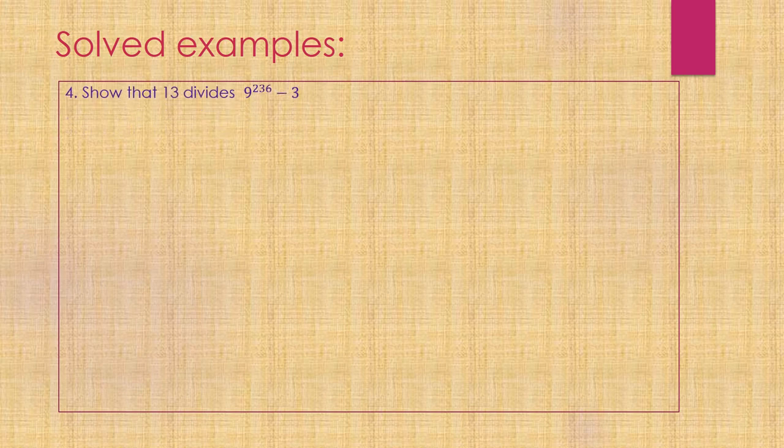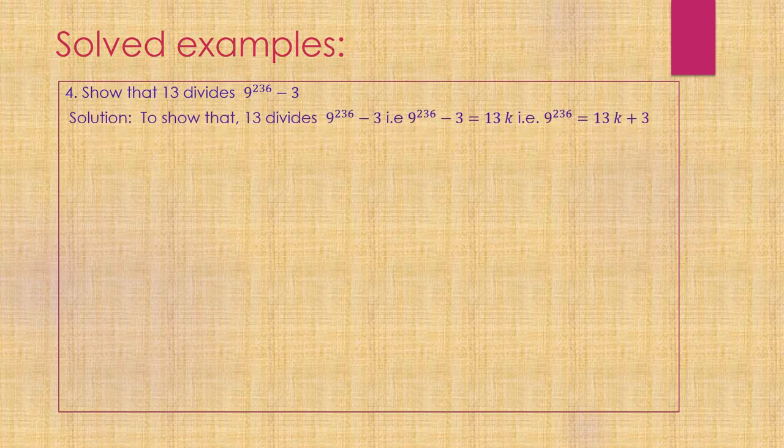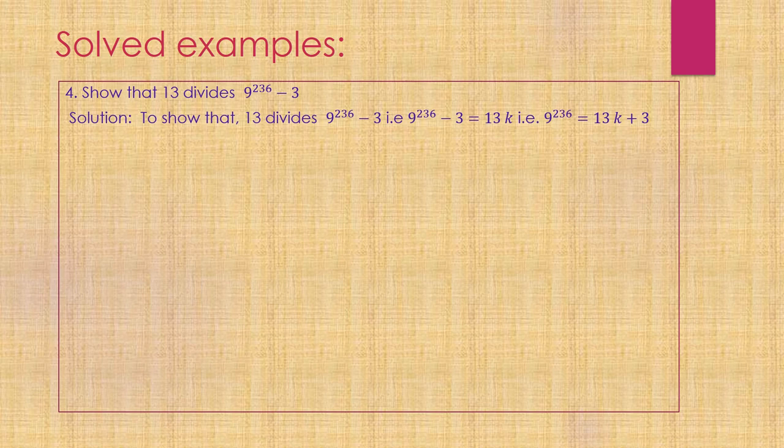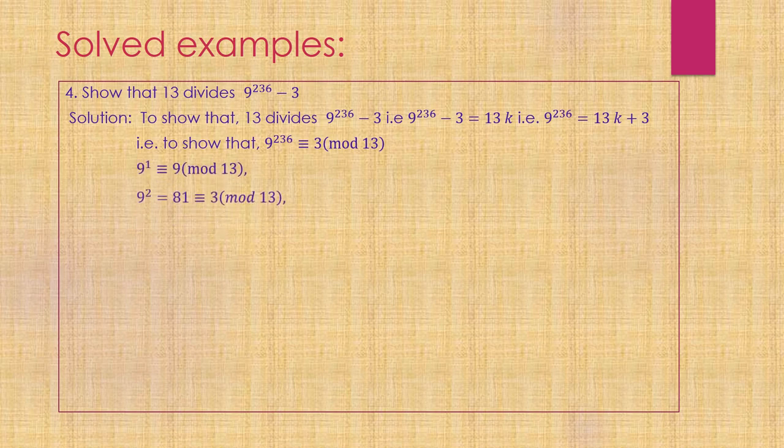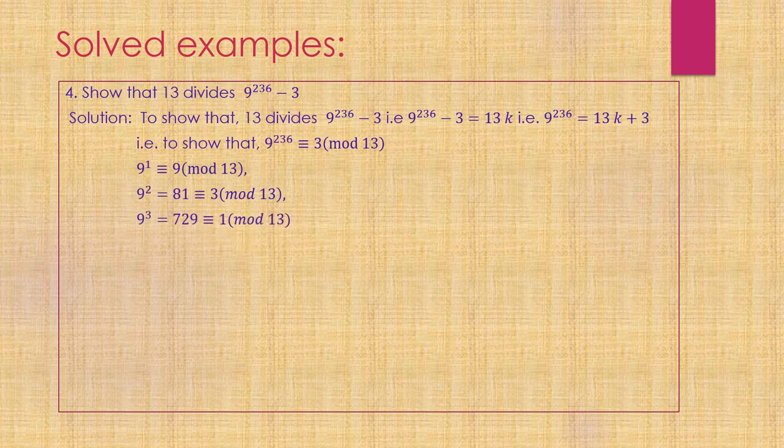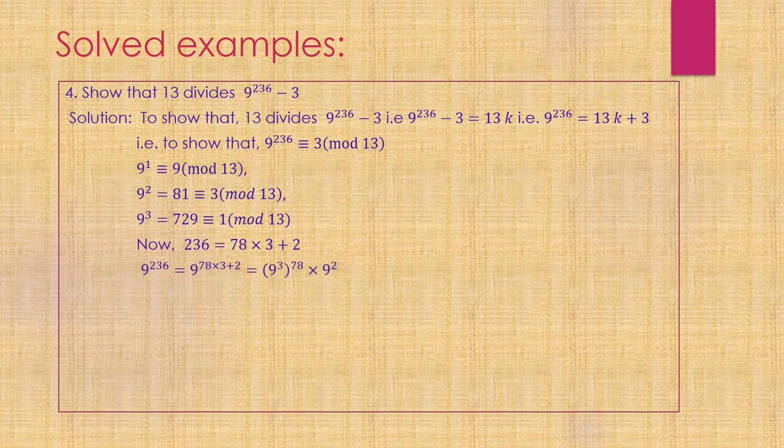Show that 13 divides 9^236 minus 3. I need to show that 9^236 minus 3 is a multiple of 13. In other words, I need to show that 9^236 is congruent to 3 modulo 13. For this, I'll look at powers of 9. I can see 9^3 equals 729, which is congruent to 1 modulo 13. Now, the relation of 3 with 236: 236 equals 78 times 3 plus 2.